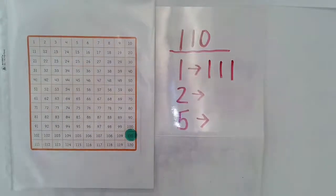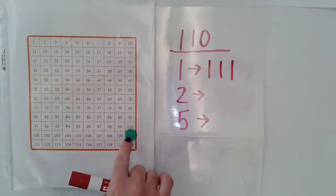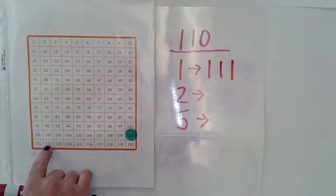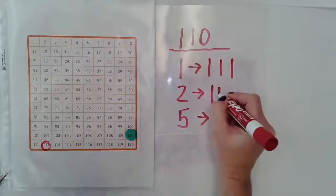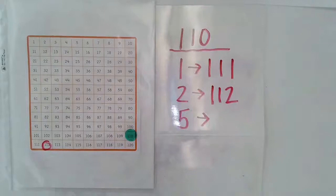All right, so next I'm going to go up by two. Again, I'm going to start with 110, and I'm going to count two blocks. One, two, which gives me 112.